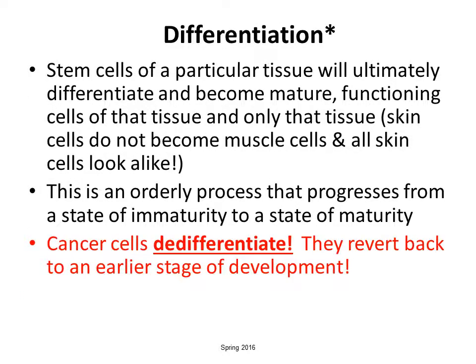What is differentiation? This means that cells of a particular tissue will only become that tissue as they grow and mature. Skin cells do not become muscle cells — we don't change. All skin cells will usually look alike. In anatomy and physiology, you lined up cells, looked at them under a microscope, and could identify what type of cell it was based on how they look. It's an orderly process from immaturity to maturity. In cancer, all bets are off — the cells no longer behave the way they should and revert back to an earlier stage of development.